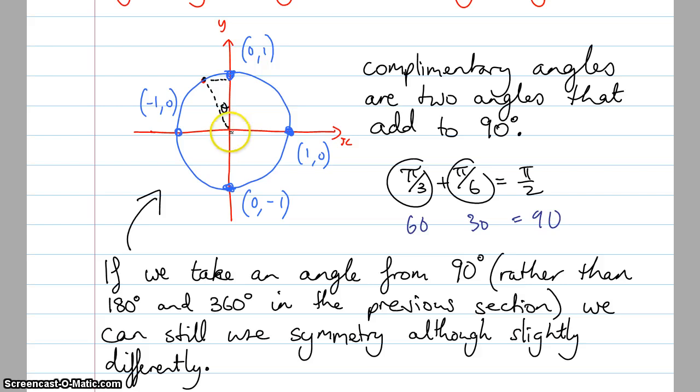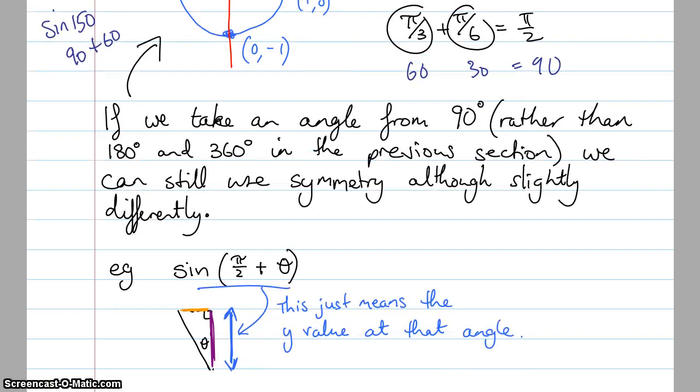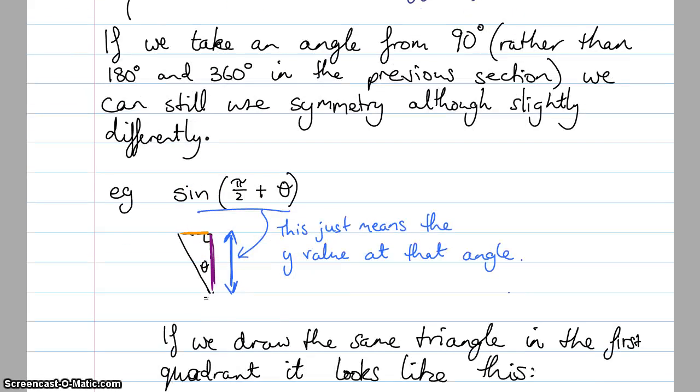Most commonly in year 10 and year 11, you've been taking angles from here or from here. So if I asked you to do sine of 150, you would say, well, I'll find 180 and I'll minus 30 from it. Now what I'm going to get us to do in year 12, is instead of doing 180 minus 30 to get to 150, I can actually say that it's 90 plus 60. And I will get a similar sort of answer. So sine of π/2 plus theta, this just means that the y value at that angle, if we draw the same triangle in the first quadrant, it looks a little bit different.